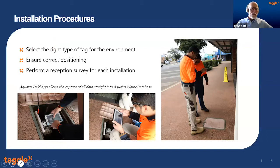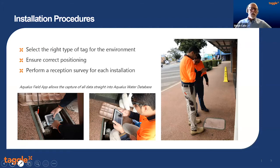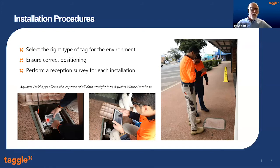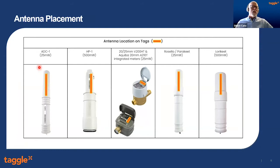Installation comes down to some pretty straightforward things: selecting the right type of tag for the environment, ensuring they're placed in the right position, and most importantly during install is doing a reception survey for each installation. You can see here our Aqualus field app on a tablet, taking a geo map of where that tag and meter is to feed back into Aqualus water software.